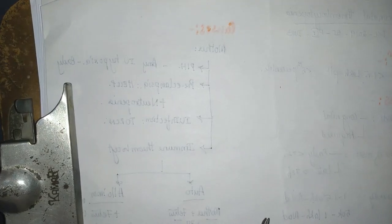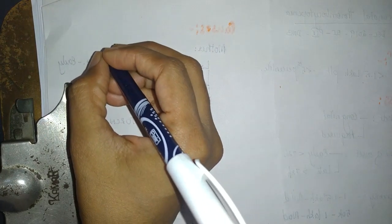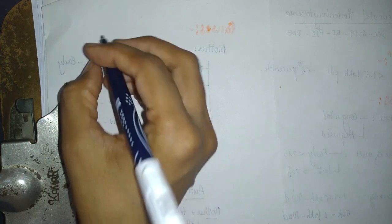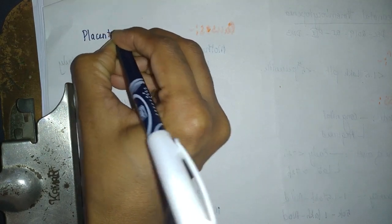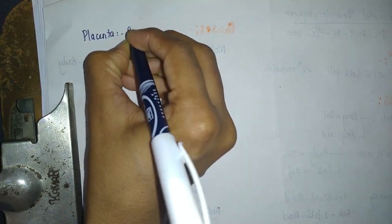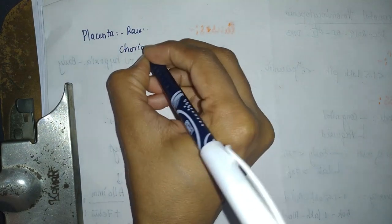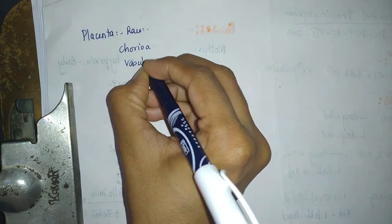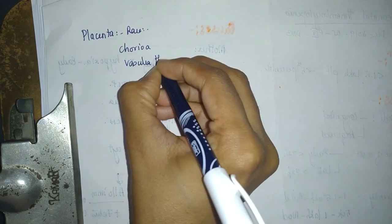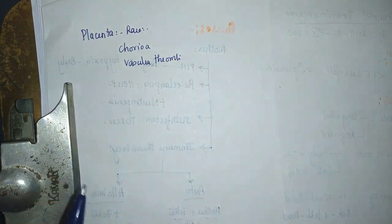Next, coming to placenta. Will the placenta be causing something? It is usually very rare. If at all, some chorioangioma or vascular thrombus if present can cause thrombocytopenia.